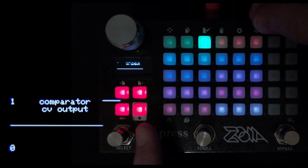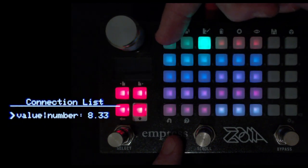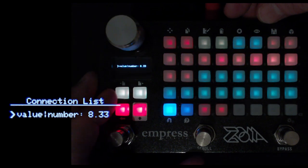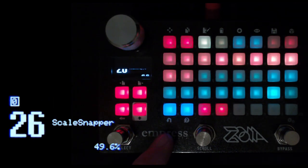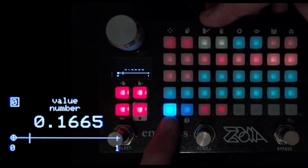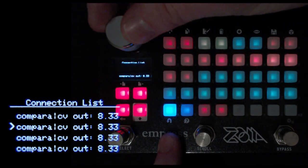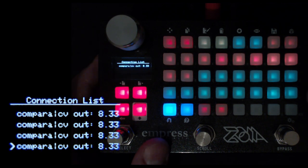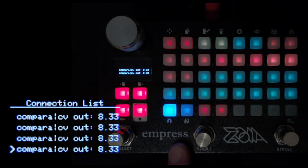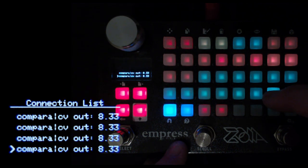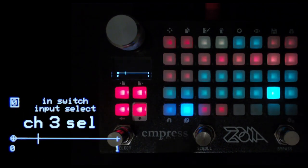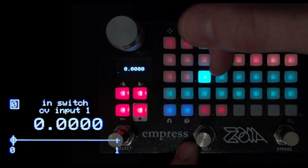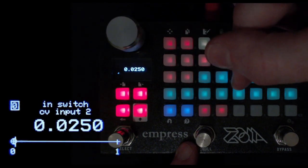The comparators go to a value module. This value module gets its input from all the comparators, and the connection value is at 8.33% for all of them. There's a reason for this. As each of them is triggered in turn, we want them to select a channel on this switch here. This is another in-switch that will send out the new note value.